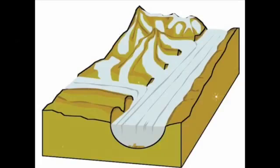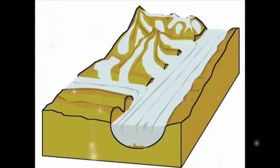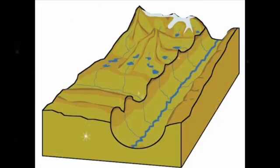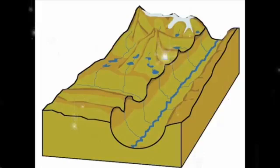This is a view of an active trunk glacier with associated tributary glaciers. There is more snow accumulation than melting, so the glacier is growing. In the post-glacial view, when there is more melt than snow accumulation, the glacier recedes, and the landscape reflects the years of glacial erosion.